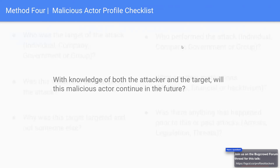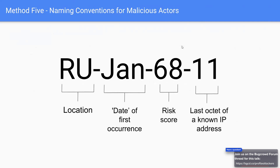Building a knowledge base and looking at the bigger picture is great, but understanding if we're still at risk is far more important. Method Five — which could really be called Method 0.5 — is less about offender profiling and more about offender categorizing. It asks: can we create a semi-unique naming convention for our malicious actors that we can instantly glean information from? We break the name into four areas: location where we first saw the actor, date first seen, their risk score, and the last octet of their first seen or most common IP address — giving a semi-unique identifier. We could also use a MAC address or a hash.